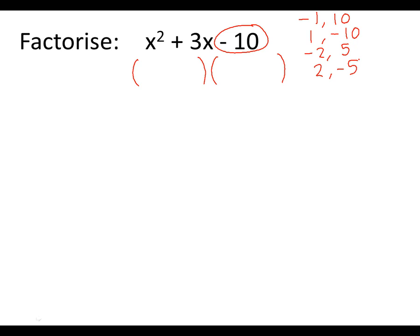So we look in the middle of the question and it says plus 3x. So we need to pick one of these pairs of numbers that adds together to make plus 3x. So we're going to pick minus 2 and 5 because minus 2 plus 5 gives plus 3x. So we know that in our brackets goes x minus 2 and x plus 5.